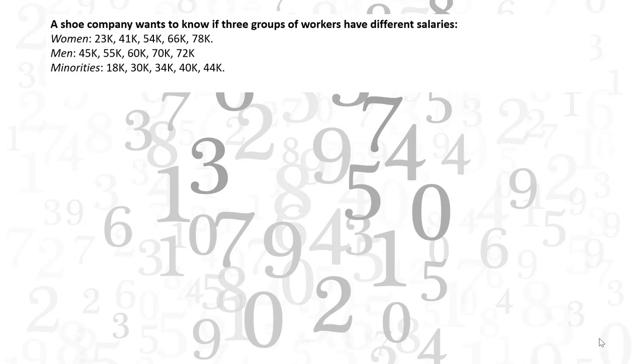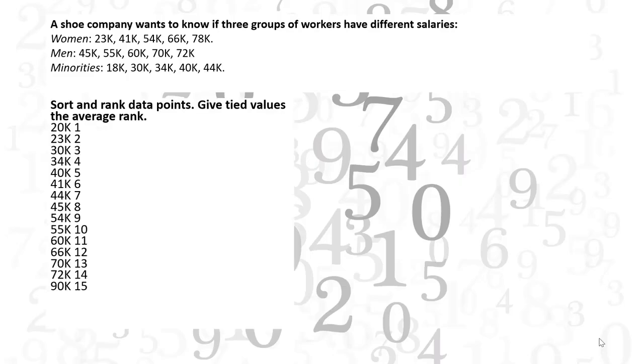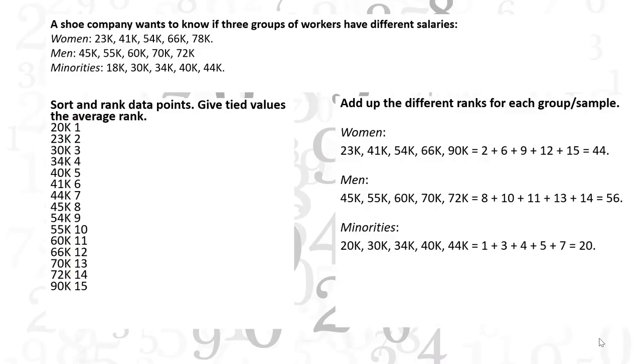The first step is to sort the data for all group samples into ascending order in one combined set. Assign ranks to the sorted data. Next, add up the different ranks for each group.